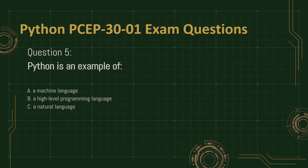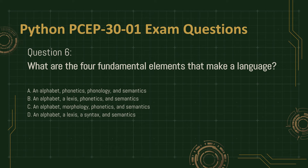Question 5. Python is an example of: A. A machine language. B. A high-level programming language. C. A natural language. Question 6. What are the four fundamental elements that make a language? A. An alphabet, phonetics, phonology, and semantics. B. An alphabet, a lexis, phonetics, and semantics. C. An alphabet, morphology, phonetics, and semantics. D. An alphabet, a lexis, a syntax, and semantics.